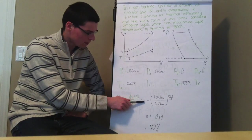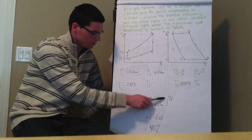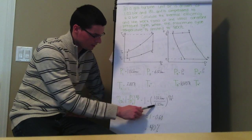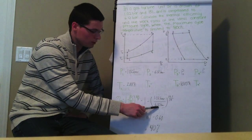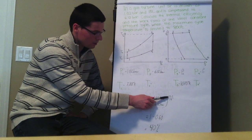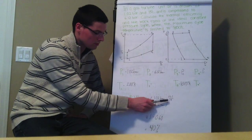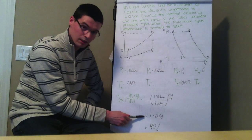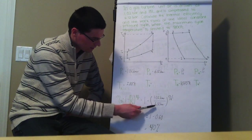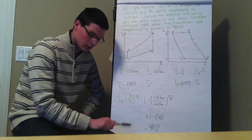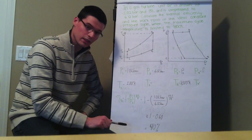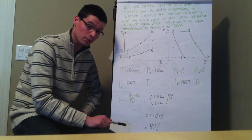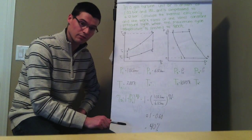So we can see here one minus pressure one, 1.02 bar, divided by pressure two, 6.12 bar, all to the power of 1.4 minus one divided by 1.4. So it's approximately equal to one minus 0.6, which if you punch that into your calculator, comes out to about 40%. So not bad for efficiency.